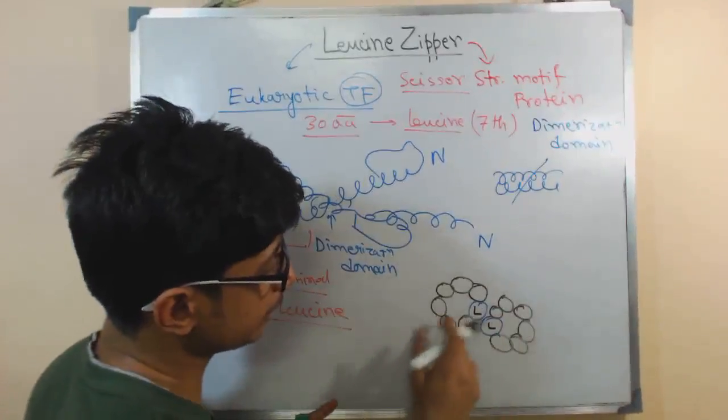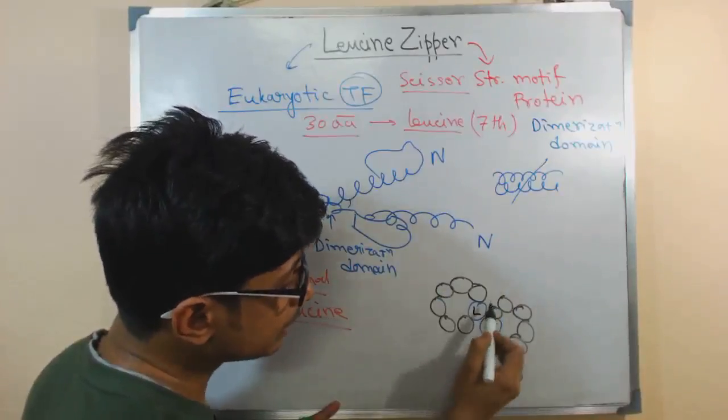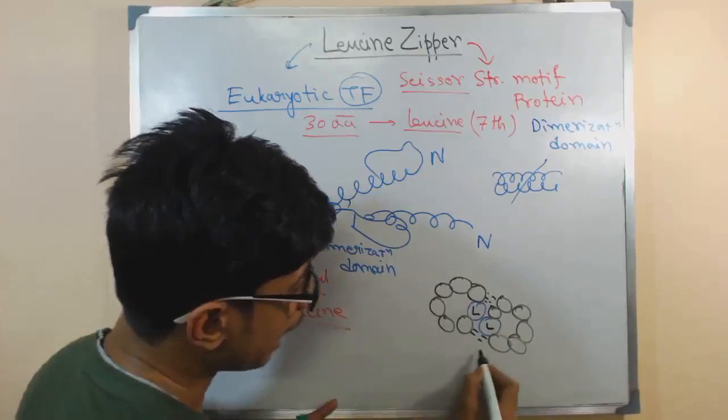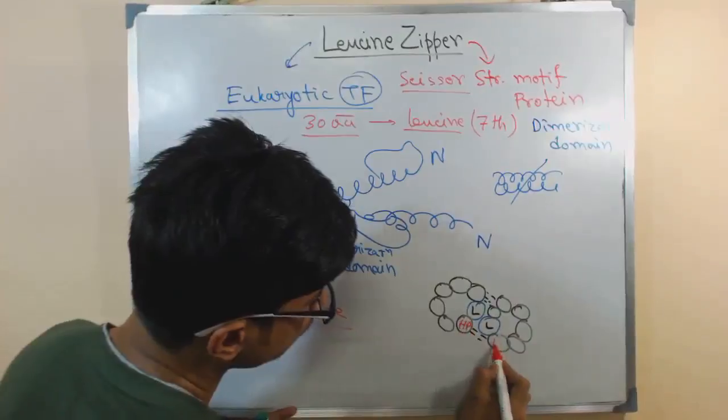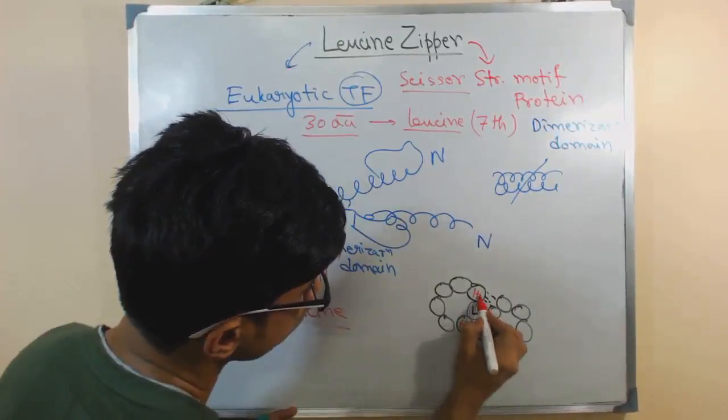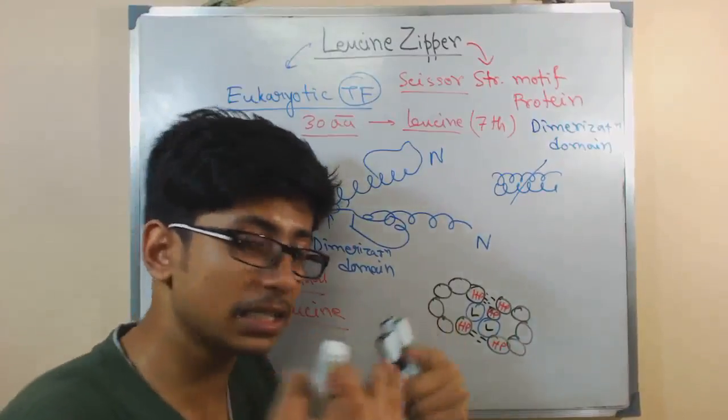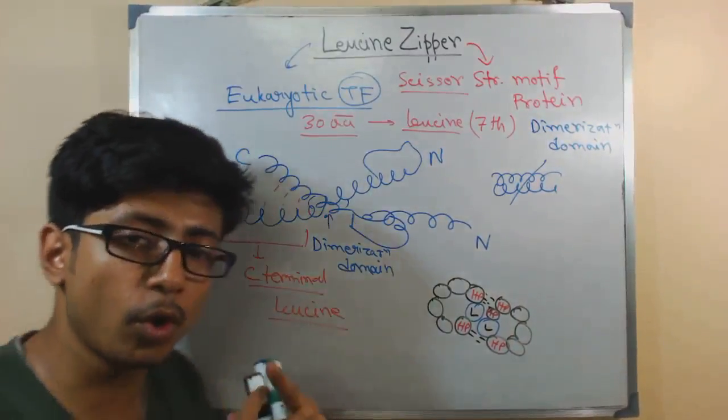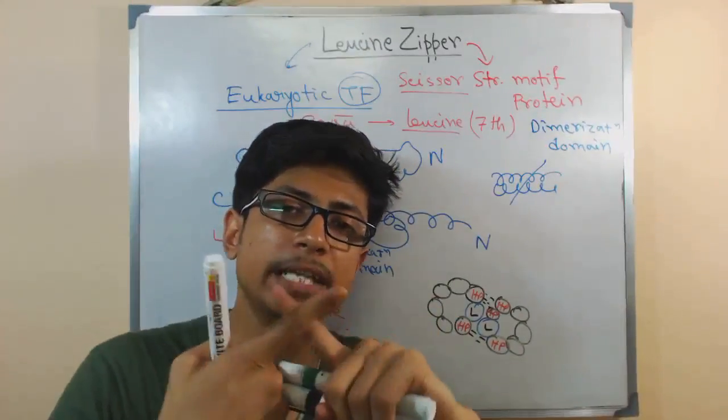You see two leucines interacting. These are hydrophobic amino acids. They're present in the internal side, and that forms this hydrophobic core which helps in the assembly of two alpha helices together.